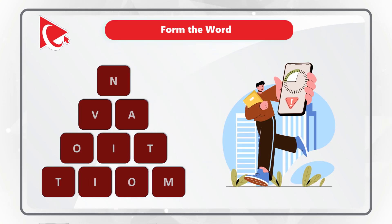Here is a frequent test problem where you need to determine the age of family members. Today, a father is 3 times as old as his son. After 15 years, the father will be twice as old as his son. What is the father's present age? You have 4 choices: A, 40 years; B, 45 years; C, 50 years; D, 55 years. Do you see the answer?